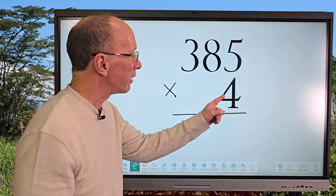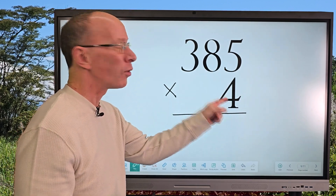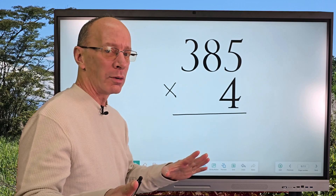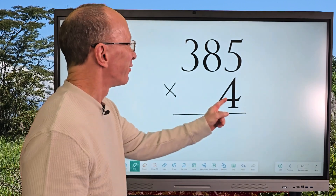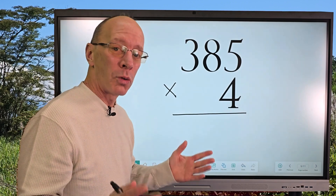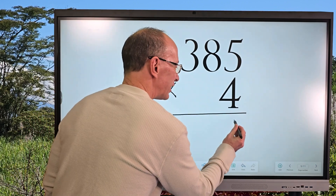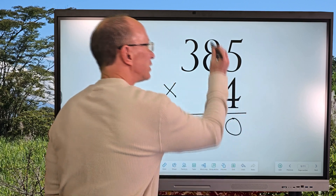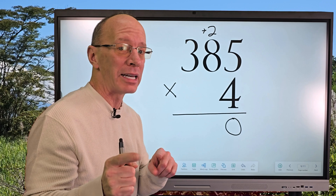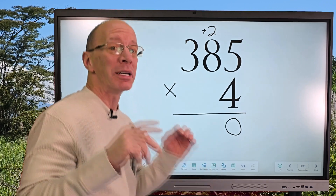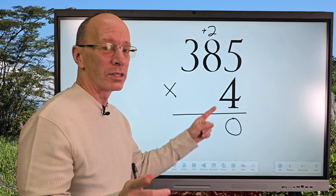We're going to multiply four times five, then four times eight, and then four times three. Don't worry, we're gonna take it easy! Four times five equals twenty. So I put the zero here and I'm gonna carry that two up here — we'll add that two in a little bit, not yet. Now I'm gonna take four times eight.